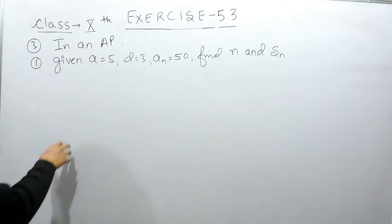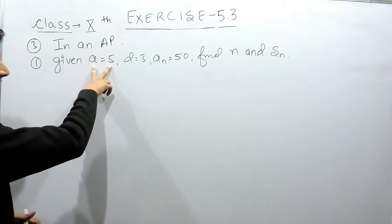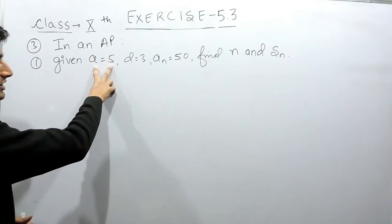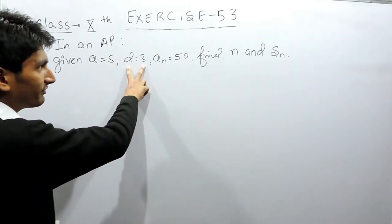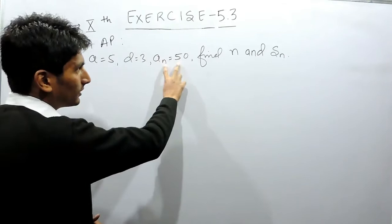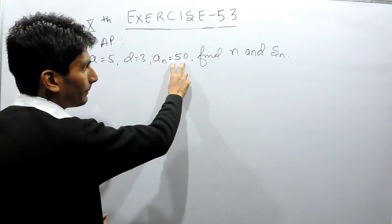In this you are given that there is an AP whose first term is 5 and the common difference is 3, and the last term which is AN of that AP is 50.